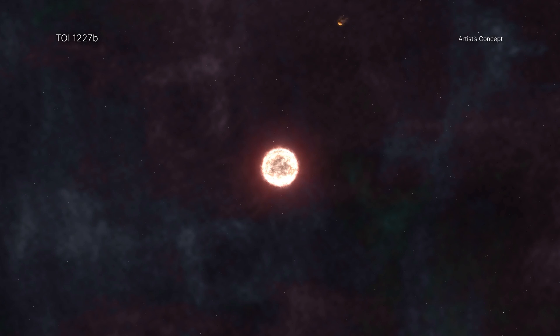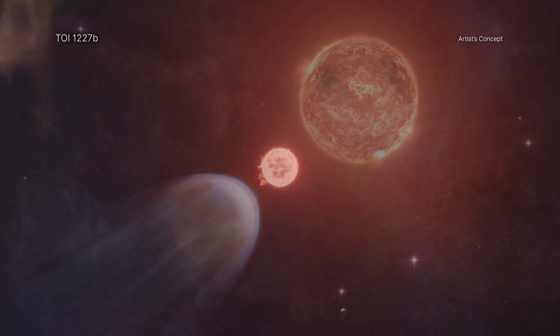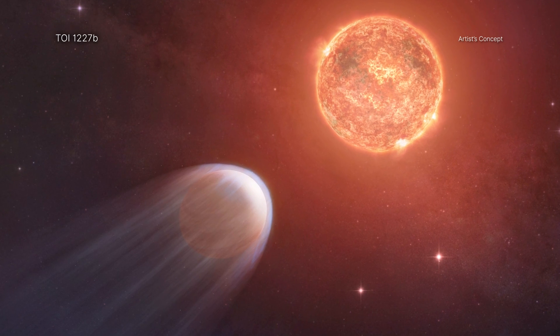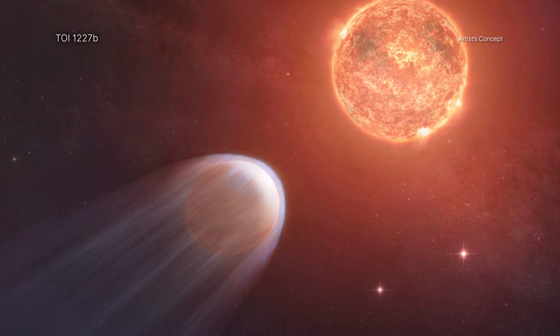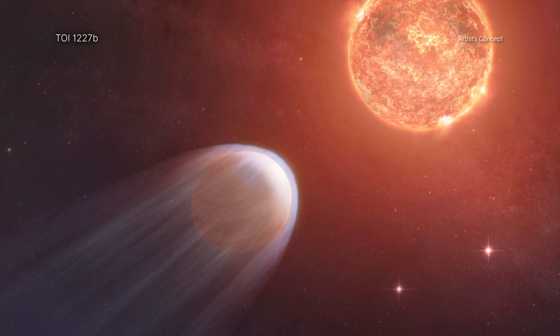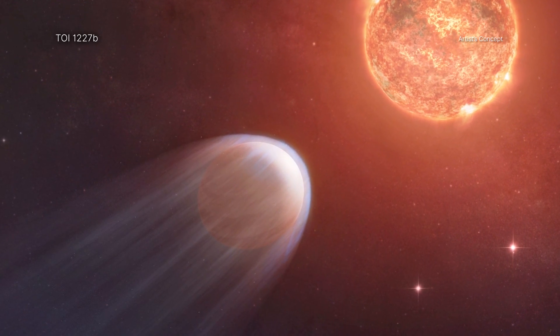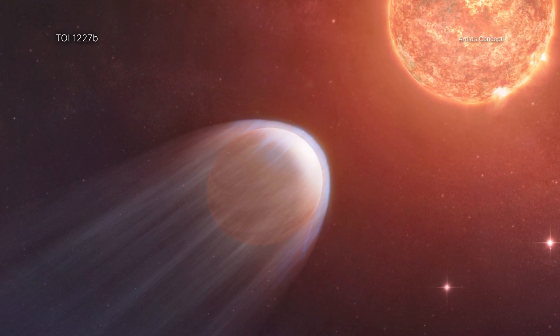By comparison, the Sun is about 5 billion years old, or nearly a thousand times older. A research team found that X-rays from its star are blasting TOI-1227b and tearing away its atmosphere at such a rate that the planet will entirely lose it in about a billion years.